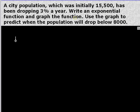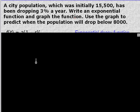A city population which was initially 15,500 has been dropping 3% a year. Write an exponential function and graph the function. Use the graph to predict when the population will drop below 8,000. So again, if our model looks like A(t) = a(1 - r)^t, we're dropping. So it's going to be minus r to the t. So our initial value is 15,500. Our rate, 3%. Remember, 3% is 0.03. So don't forget to turn it into decimal form, the percent into decimal.